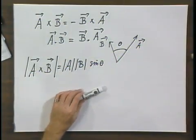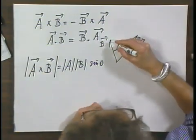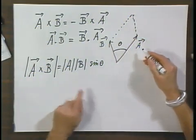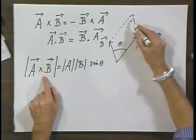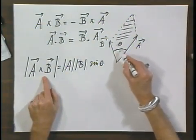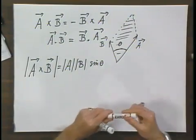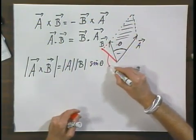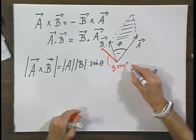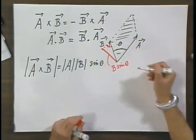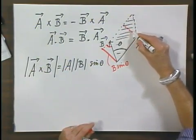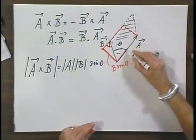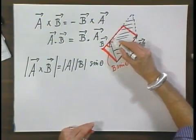Look at this a little more closely. If I make a parallelogram here, then I would claim that the magnitude of the cross product between A and B is this surface area. You can easily see that this is length A, and this length is B times the sine of theta. If this angle is theta, this is also theta. So the area B·sin(θ) times A is exactly this area.